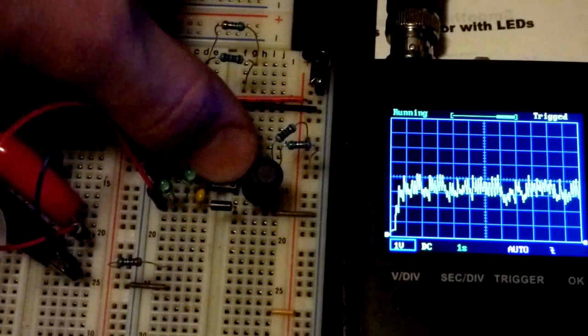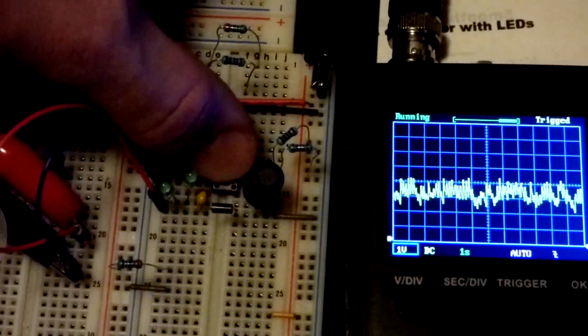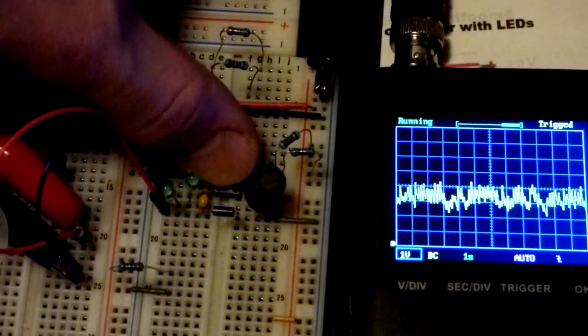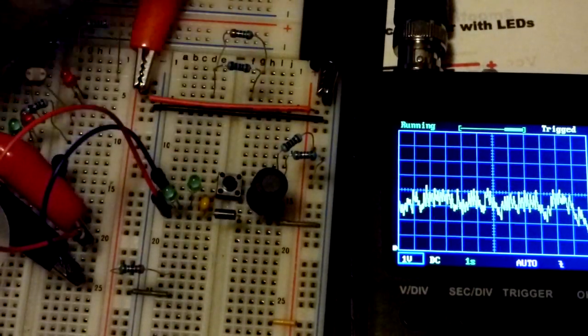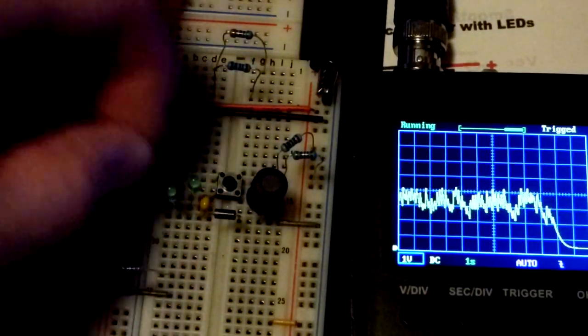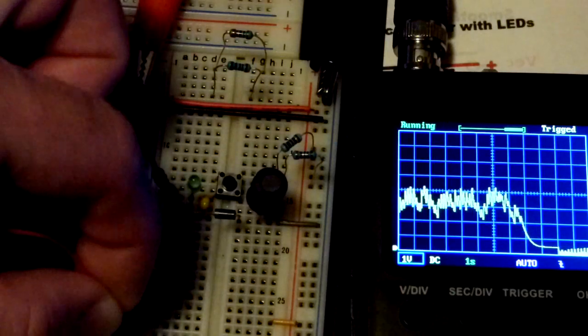I think it does briefly spike up higher but the oscilloscope's just not picking it up. You can see that the LEDs flash briefly. Maybe they can get a little bit of current flow through at four volts.